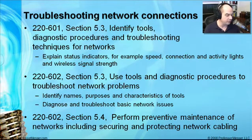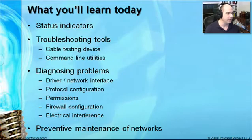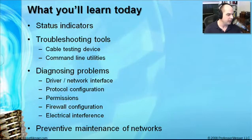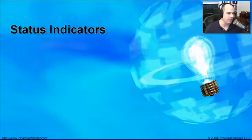We'll also talk about requirements from Section 5.4 of the 602 exam, covering preventive maintenance — what we need to look at on the network to make sure everything maintains itself and is up and running whenever we need it. Today we'll cover status indicators, troubleshooting tools both external and internal to our systems, diagnosing problems from driver and network issues through permissions and electrical interference, and finally preventive maintenance of networks.